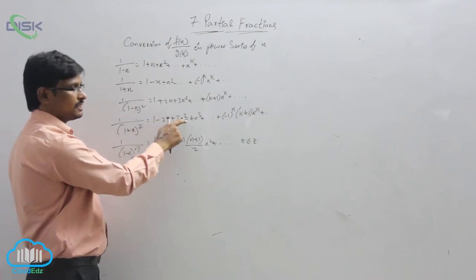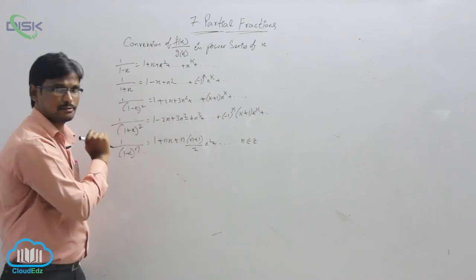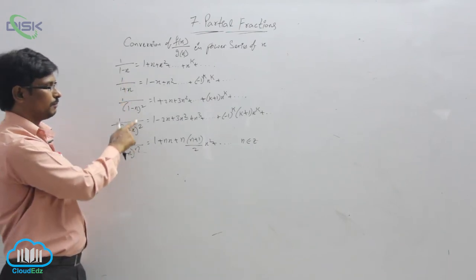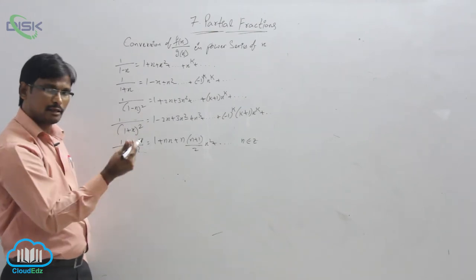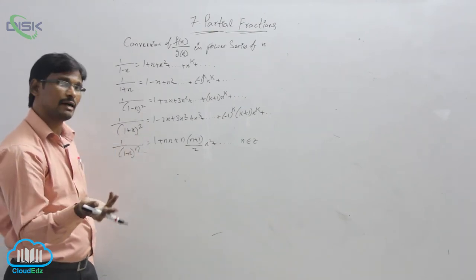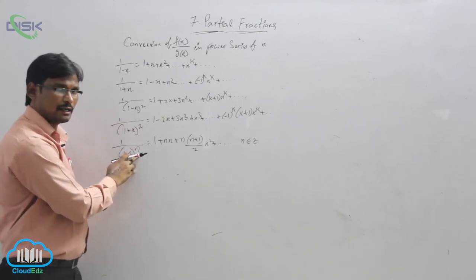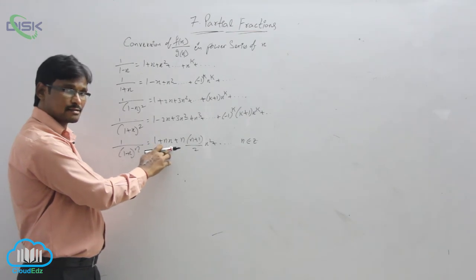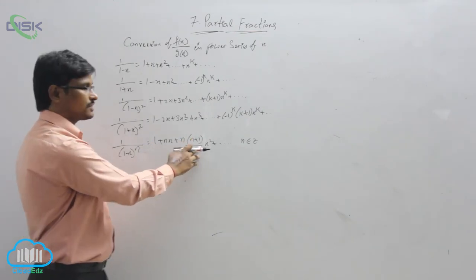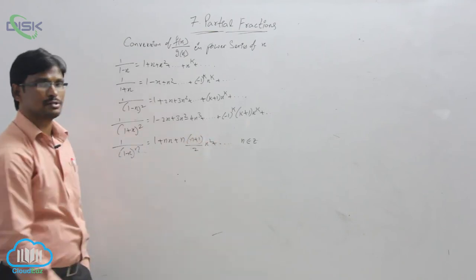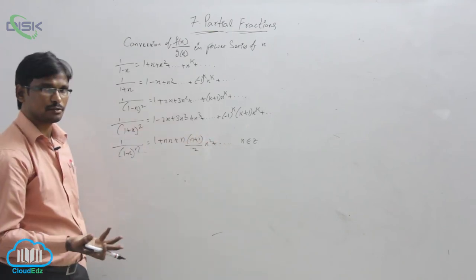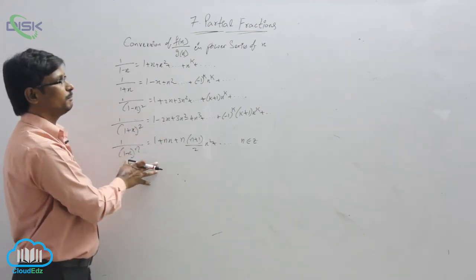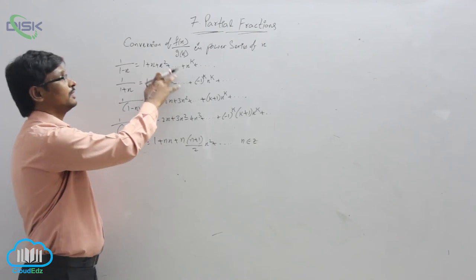For whole power 1, whole power 2, and extending to whole power n in general, the expansion of (1 minus x) to the power n will be 1 plus nx plus n(n plus 1) by 2 times x squared, and so on, where n belongs to integers, which may be negative or positive. So in general we write (1 minus x) to the power n. These are the power series of x.